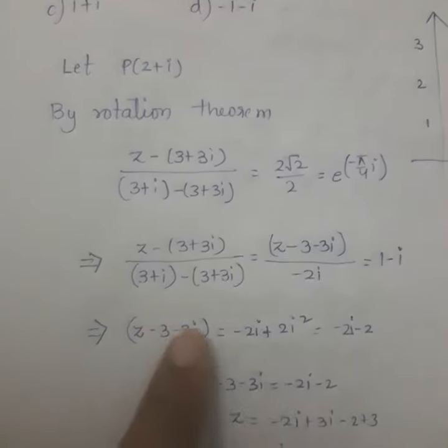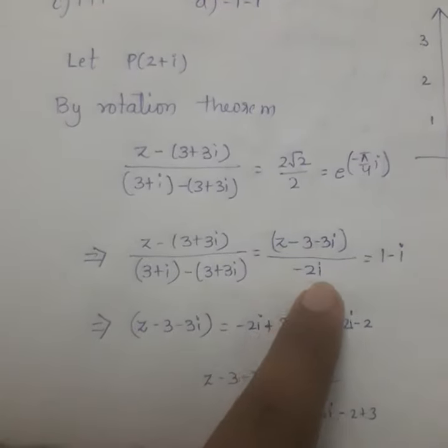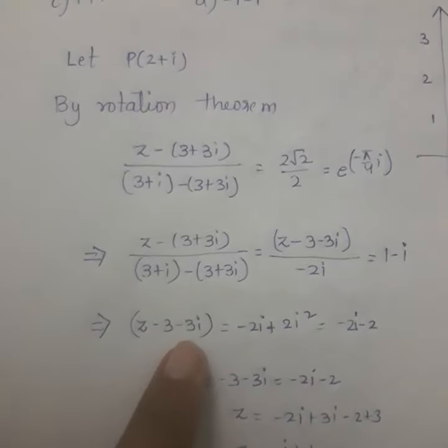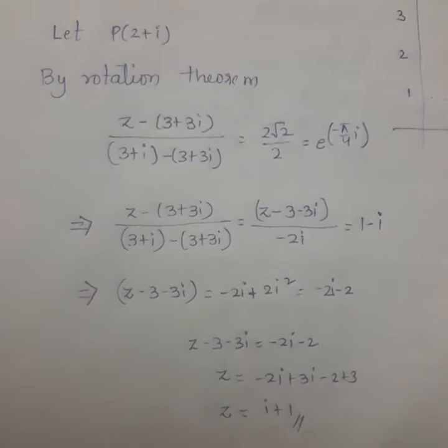When I am expanding, I am getting z minus (3 minus 3i) by -2i. That is nothing but 1 minus i. So equating both of these and solving, I am getting z value as 1 plus i. 1 plus i will be the answer to this question.